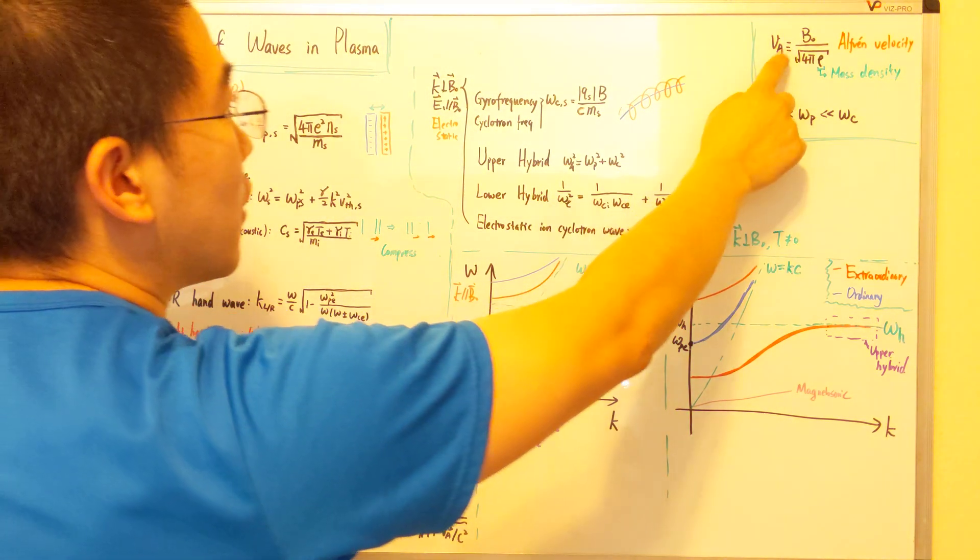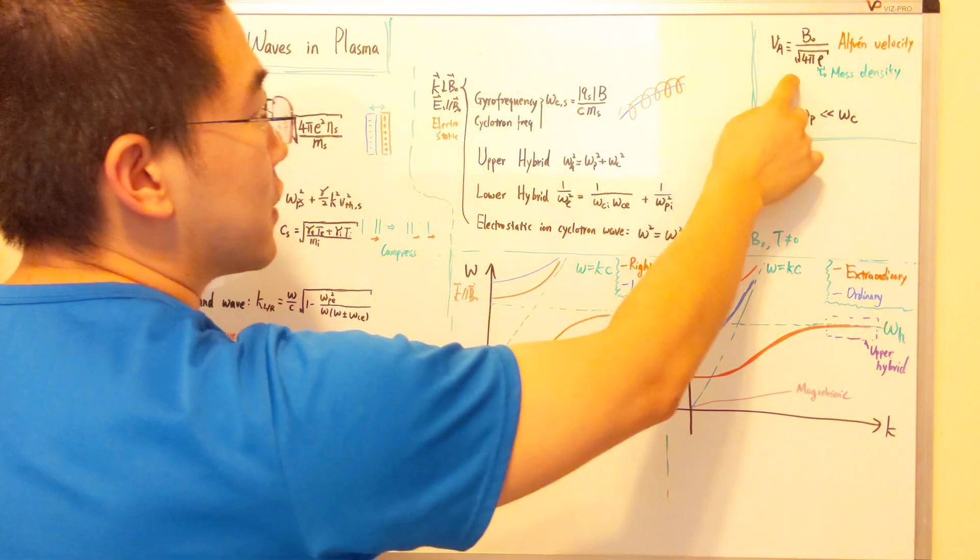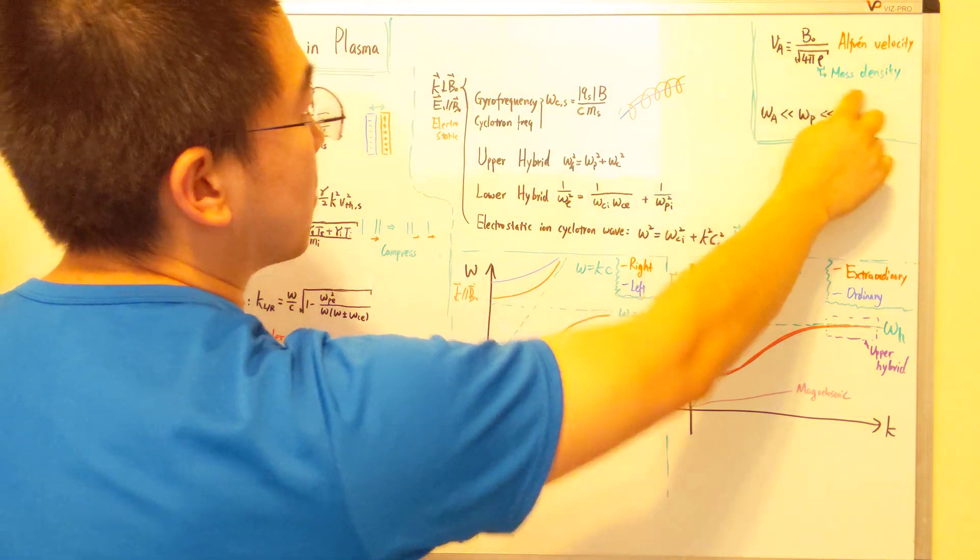And also the definition of Alfven speed, v-a, is defined as this, and where rho is a mass density.